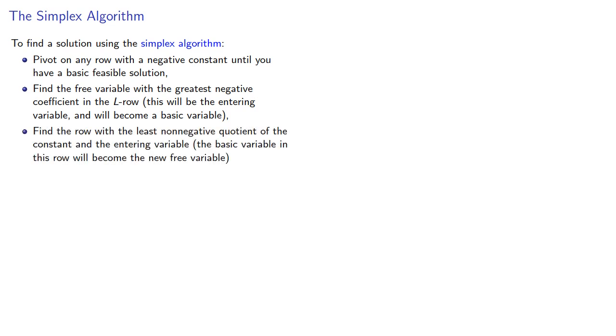Find the row with the least non-negative quotient of the constant and the entering variable. The basic variable in this row will become the new free variable. Then lather, rinse, repeat until all coefficients in the L row are non-negative.